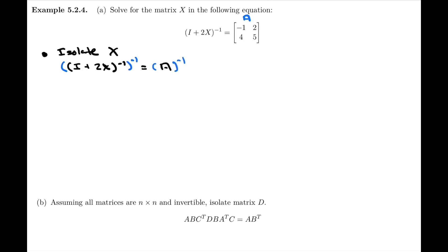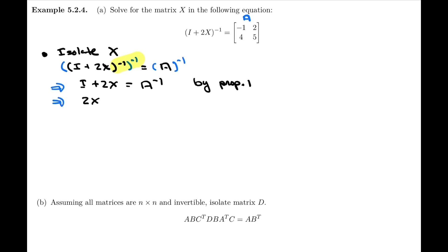You can put a bracket around the A. I'm going to be using a property here — remember, the first property we saw was that the inverse of the inverse yields the original matrix. So in the next step, we have that all of this equals I plus 2X; the inverses have canceled out, equals A inverse. This was by property one from the previous video.